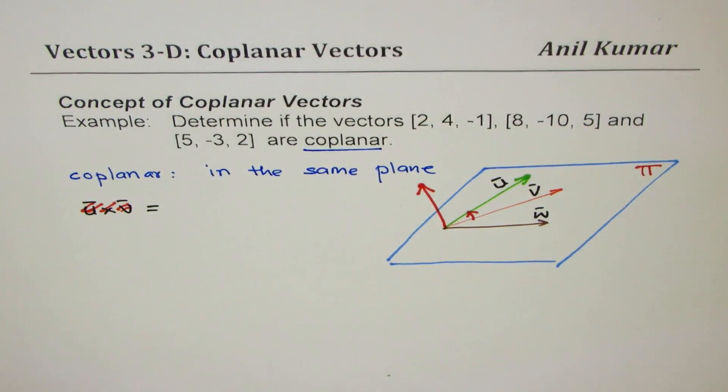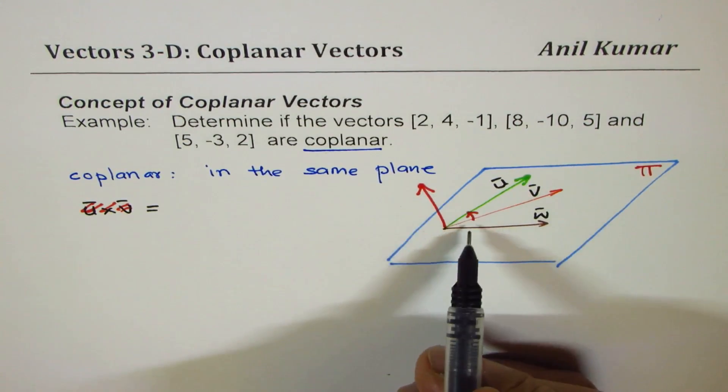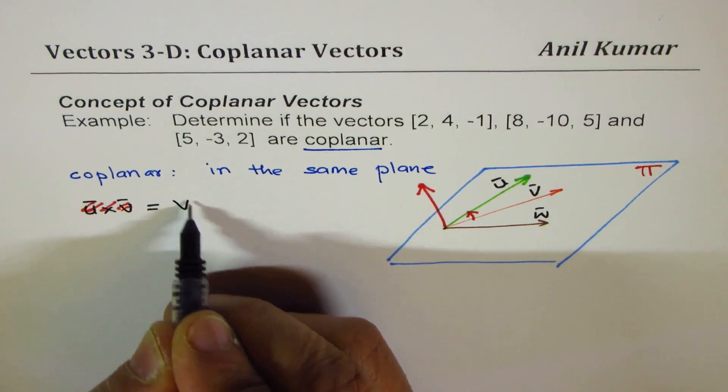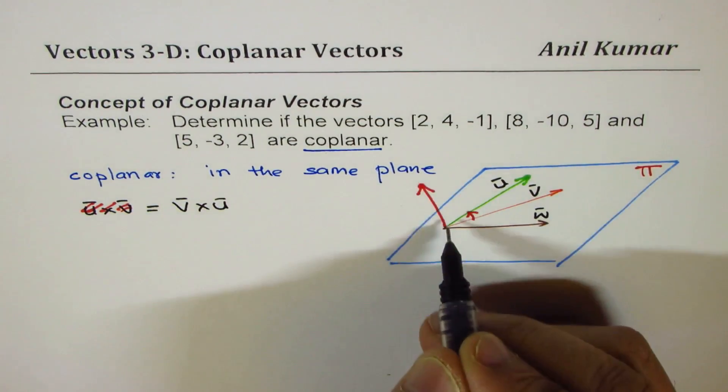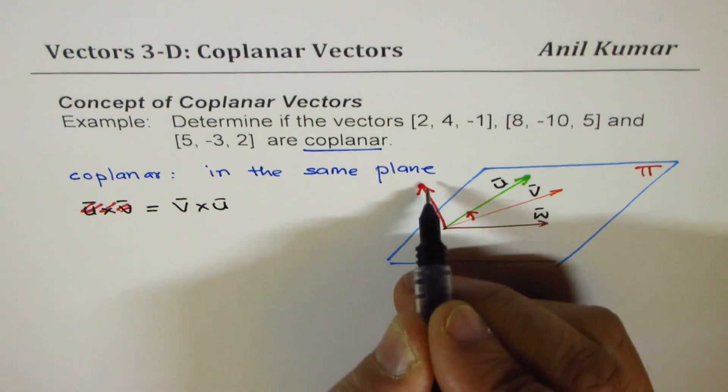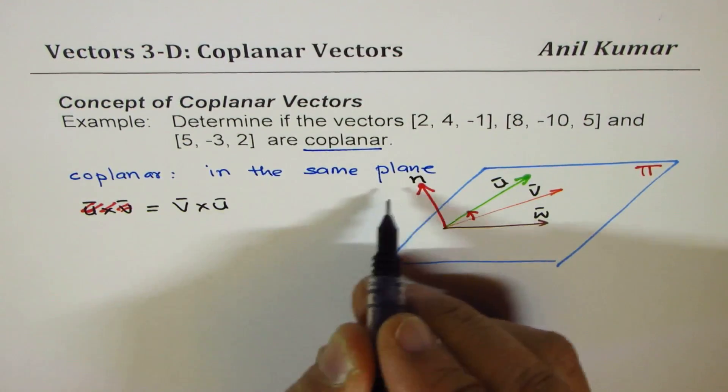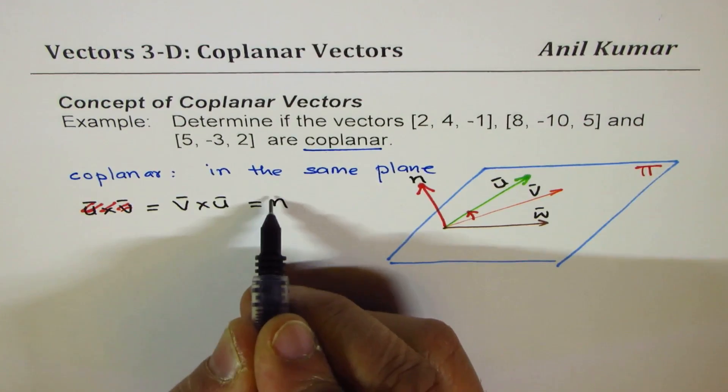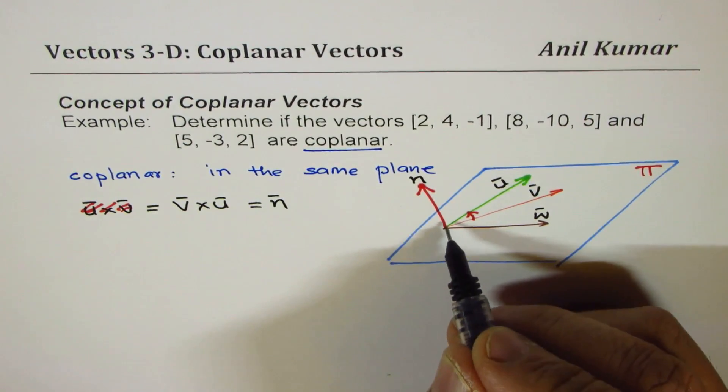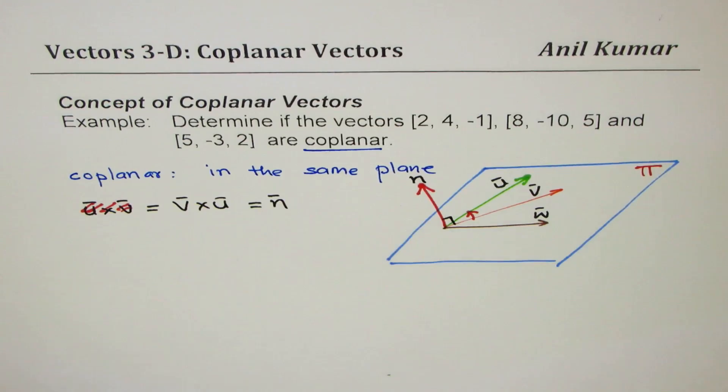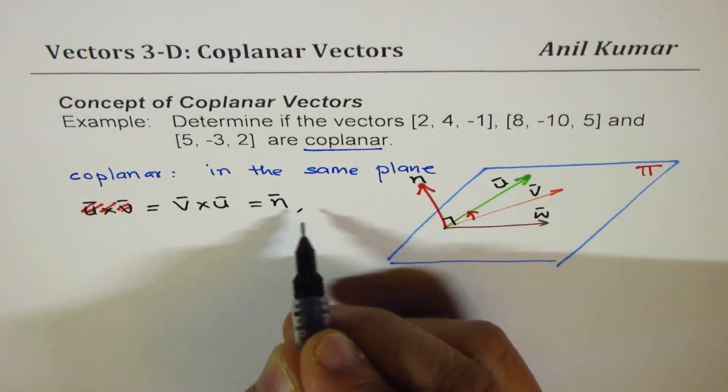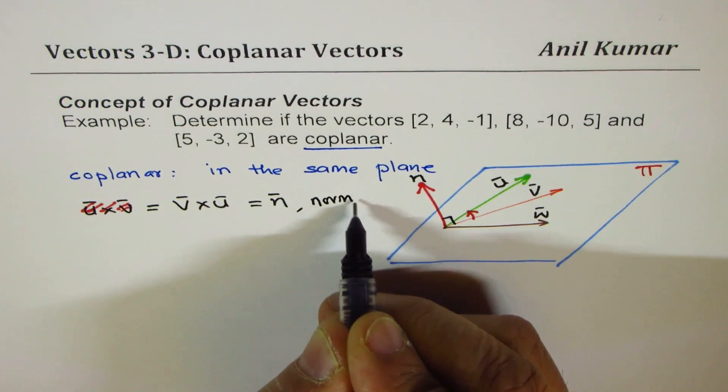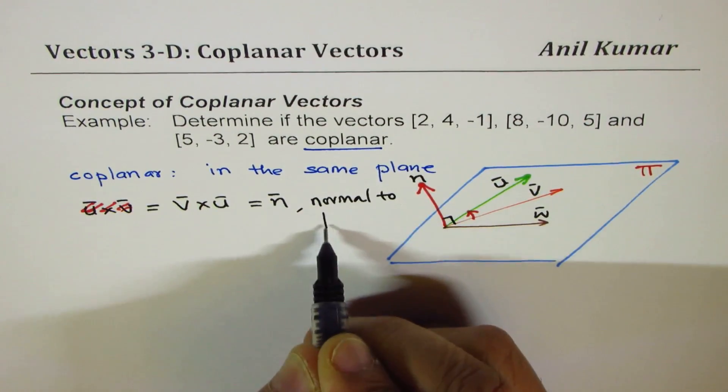We'll assume that we are doing v cross u. So the vector will be pointing outside and let's call this normal n. This vector is going to be normal to both these vectors. It is normal to the plane π.